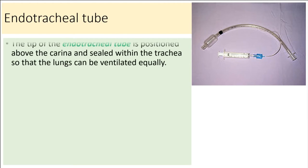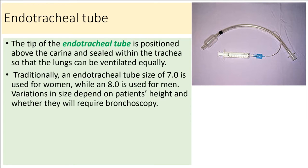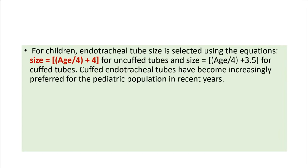The tip of the endotracheal tube is positioned above the carina and sealed within the trachea so that the lungs can be ventilated. Traditionally, an endotracheal tube size of 7.0 is used for women, while an 8.0 is used for men. Variations in size depend on the patient's height and whether bronchoscopy will be required, which needs at least a 7.5 or 8.0 tube. For children, endotracheal tube size is selected using the equations: size equals age divided by 4 plus 4 for uncuffed tubes, and size equals age divided by 4 plus 3.5 for cuffed tubes.